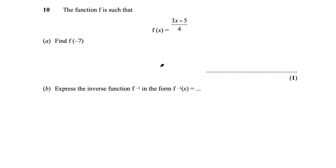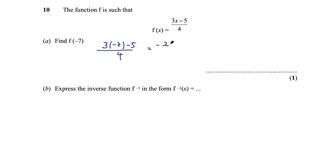Question 10: f(x) = (3x − 5)/4. Part A: find f(−7). Substitute −7: (3 × −7 − 5)/4 = (−21 − 5)/4 = −26/4 = −13/2. Final answer: −13/2.